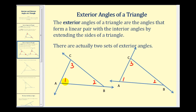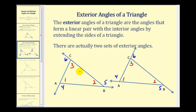So again, if angles one, two, and three are interior angles, then angles four, five, and six would be exterior angles for this triangle — notice they form linear pairs with the interior angles. Looking at the other triangle, angles four, five, and six would also be the exterior angles, and again they form linear pairs with the interior angles. It really doesn't matter which sides you extend because angle four is congruent to angle four, angle five is congruent to angle five, and angle six is congruent to angle six.